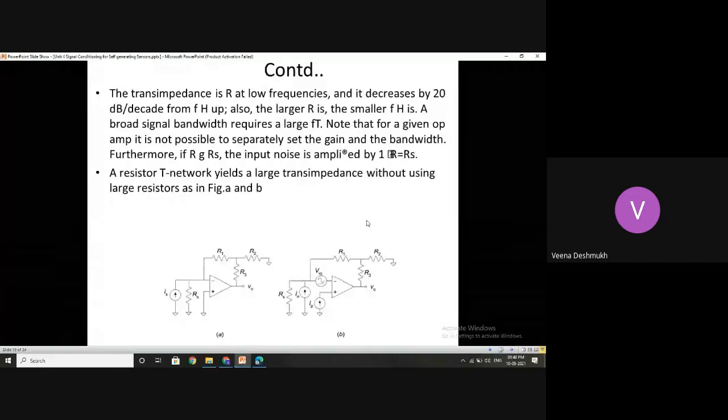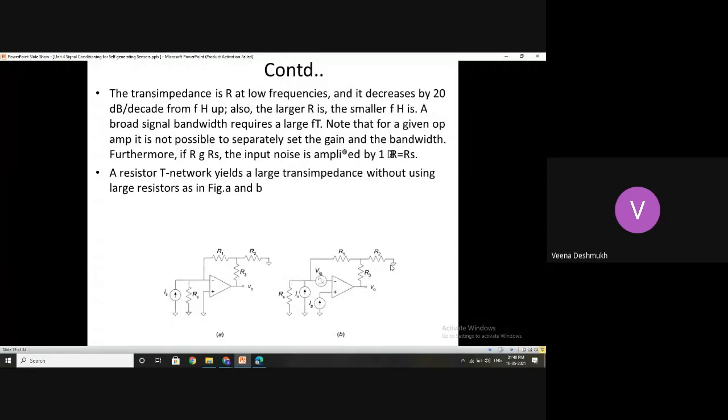Whenever such resistive networks are used, care has to be taken for power dissipation. How much is the power dissipated and what is the heat generated? Plus, due to this heat generation and self-heating, what will happen to the sensor measurements? For that, heat sinks and ambient temperature limitations have to be in place.